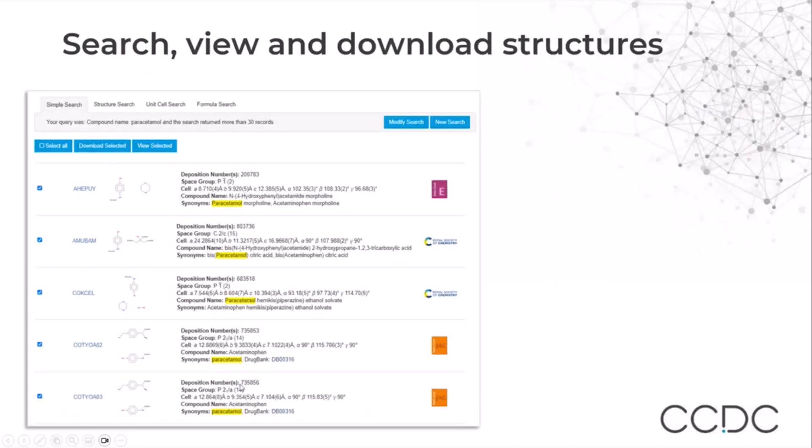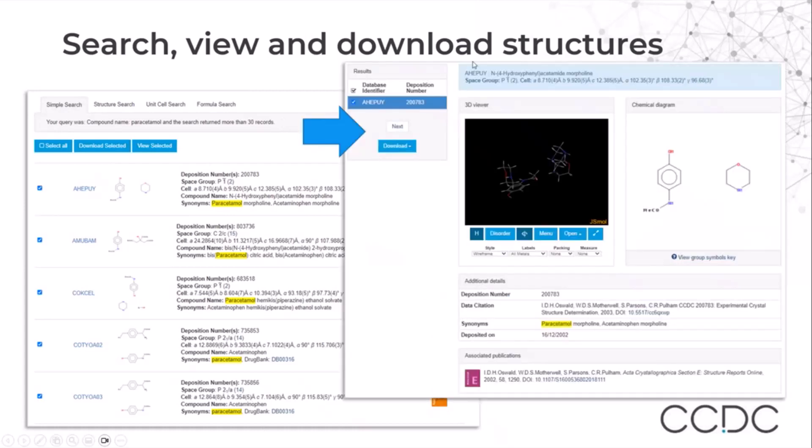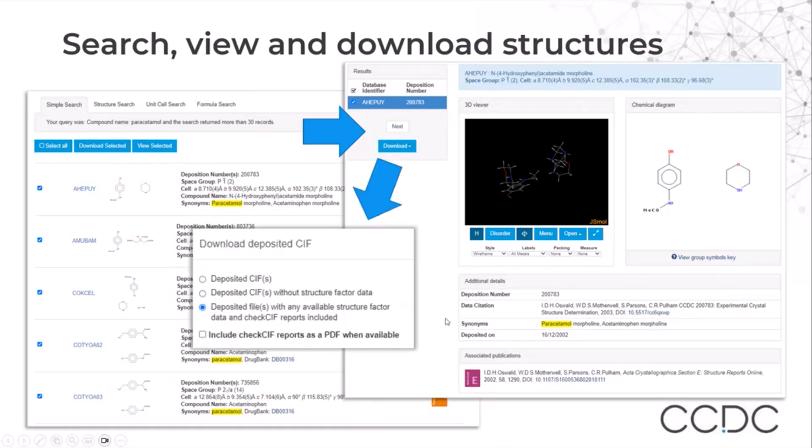Looking at the results, we see that they are listed by refcode. In this case, we searched for the compound name Paracetamol, and if we click on an entry, we can see their individual page.